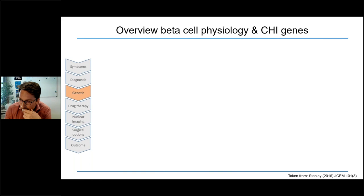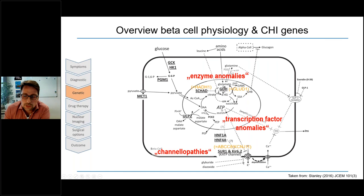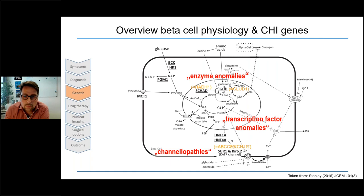To understand what leads to dysregulated insulin release, let me remind you of basic beta cell physiology. Glucose is transported into the beta cell and metabolized to ATP. ATP acts on the ATP-sensitive potassium channel — encoded by ABCC8 and KCNJ11 — causing it to close, which leads to cell depolarization, calcium influx, and insulin exocytosis. CHI is closely related to MODY and neonatal diabetes as genetic forms of insulin secretion disorders.